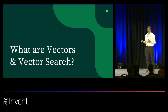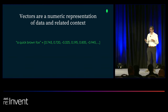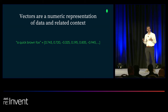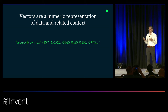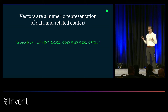So to start, what are vectors and what is Vector Search? Vectors are numeric representations of data and related context. A sentence or text snippet like 'a quick brown fox' could be represented by a high-dimensional vector. The data would be the words — a quick brown fox — but the related context would be the meaning or semantics behind that text.